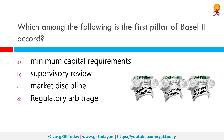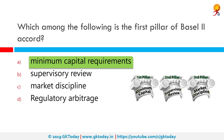Which among the following is the first pillar of the Basel II Accord? The correct answer is minimum capital requirements. Basel II uses a three-pillars concept: the first is minimum capital requirement, the second is supervisory review, and the third is market discipline. The Basel I Accord dealt with only parts of each of these pillars.